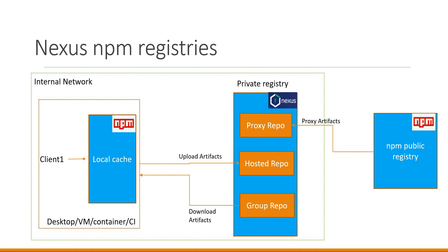Every time multiple clients run NPM commands in their client machines, the corresponding packages will be downloaded from the public registry. This is a time-consuming process because every client will download corresponding packages from the external registry. Also, because of security implications in the organization, organizations won't allow the clients to download the packages directly from the public registry.